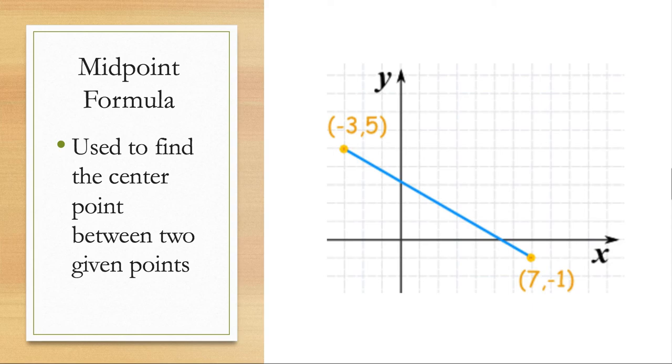So if our points are (-3, 5) and (7, -1), and we're being asked to find the midpoint, our midpoint should sit somewhere right about here. It should be the center point on the line that connects the two points.